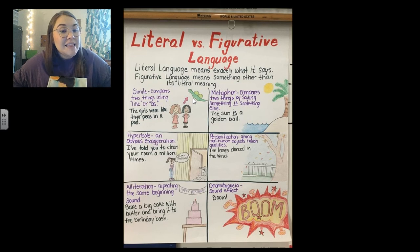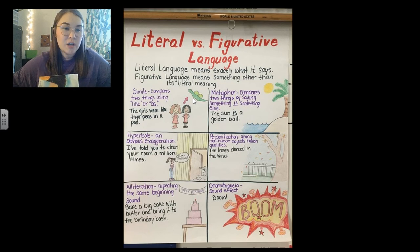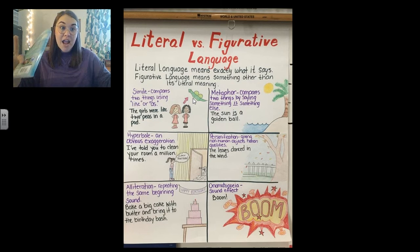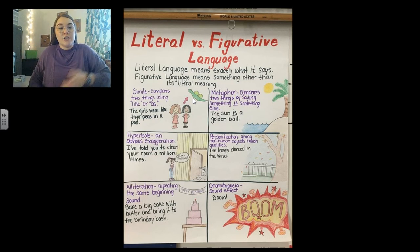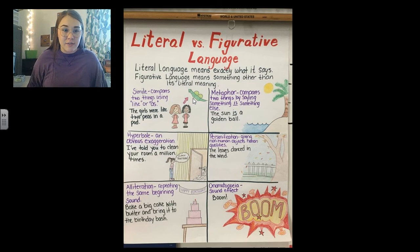Then we have alliteration — that is repeating the same beginning sound. So, bake a big cake with butter and bring it to the birthday bash — that would be alliteration. Like Sally sold seashells by the seashore, that's the S-S-S sound. Authors use alliteration to show importance, to get you to notice something. And onomatopoeia is a sound word, a sound effect — like boom, bang, crash. But mainly when we're talking about similes, metaphors, hyperbole, and personification, it doesn't literally mean what it says — it's giving you an example, trying to compare things or bring some drama to the reading passage.